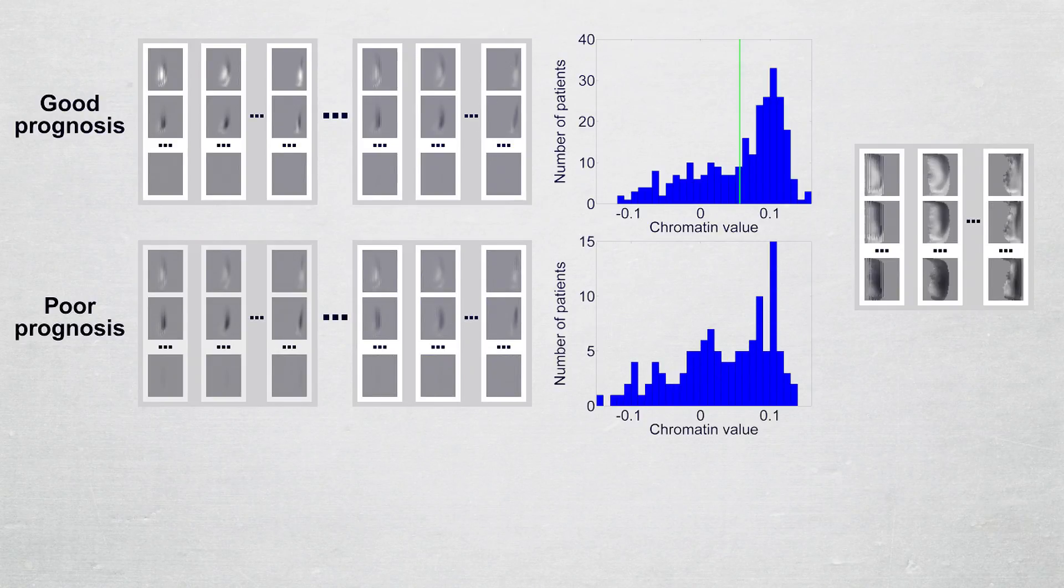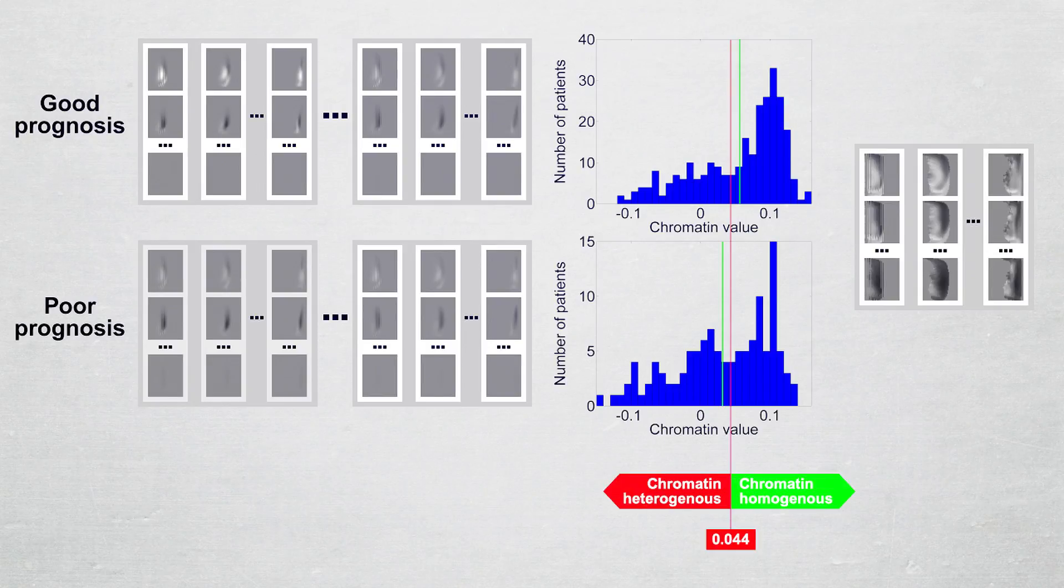The mean chromatin value of patients with good prognosis is compared to the mean of poor prognosis patients, and the average of the means is defined as the threshold that distinguishes between chromatin heterogeneous and chromatin homogeneous tumor samples.